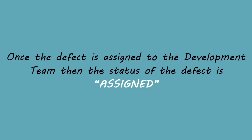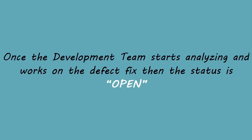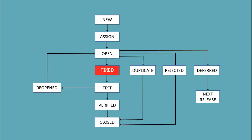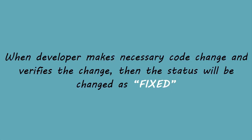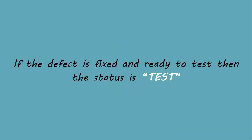The status of the bug changes to 'assigned'. If the development team accepts the bug, then the bug status changes to 'open'. If the bug status is open, it means that the development team starts analyzing and works to fix the defect. The next state is 'fixed', which means when the developer makes the necessary code changes and verifies the change, the status of the bug will be changed to 'fixed' and the bug is passed to the testing team. The development team changes the bug status to 'test'.